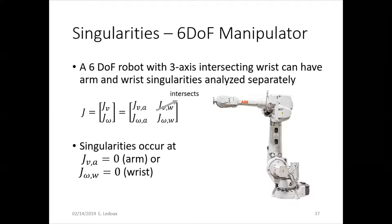In a six-degree freedom robot with a three-axis intersecting wrist, you can actually split the singularities between arm and wrist. So the singularities would occur when the three-by-three matrix Jv for the arm equals zero, or J-omega for the wrist equals zero.